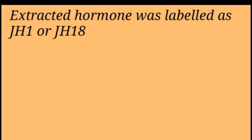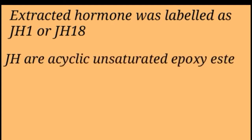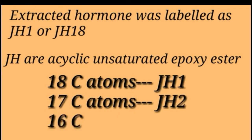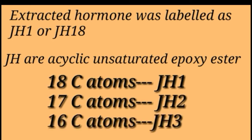JH18 means its carbon skeleton contains 18 carbon atoms. These juvenile hormones are acyclic, unsaturated epoxy esters containing 18, 17, and 16 carbon atoms in their skeleton respectively. Based on the number of carbon atoms present, they are classified as JH1, JH2, and JH3 respectively. So let's draw the structure of JH1.